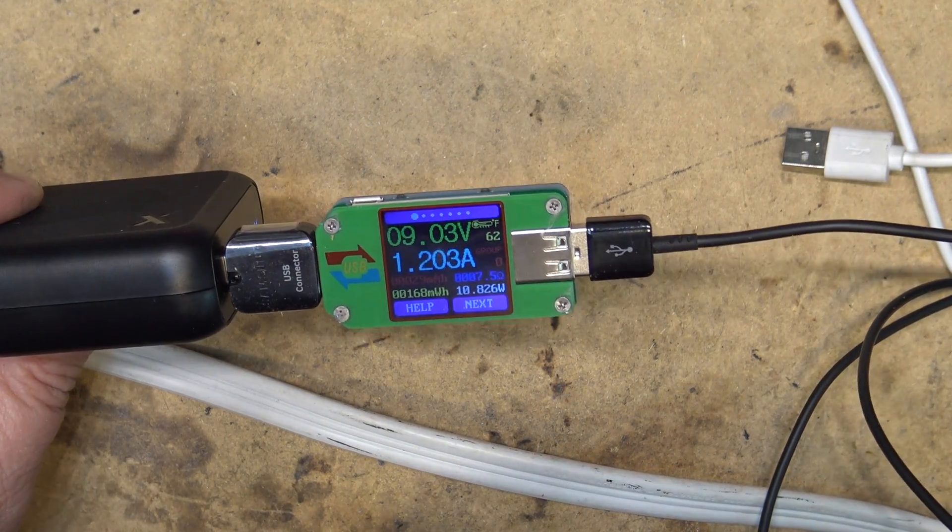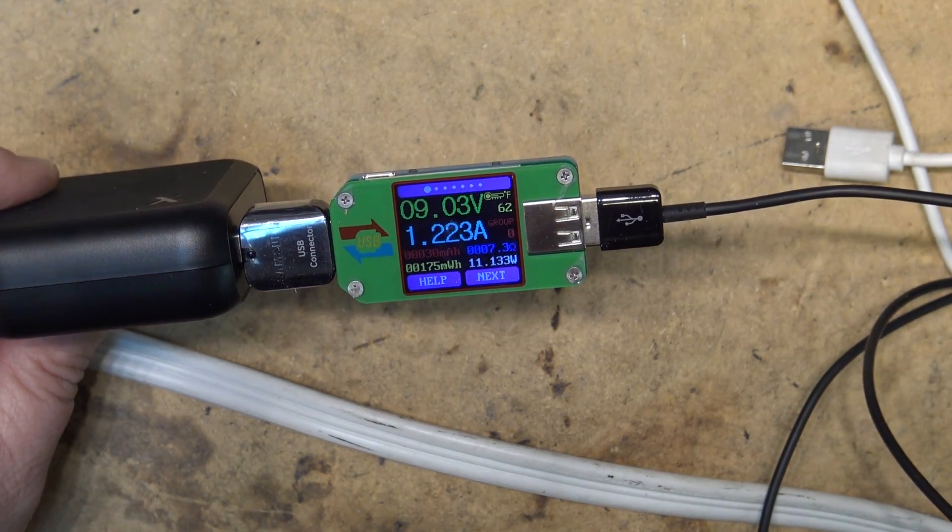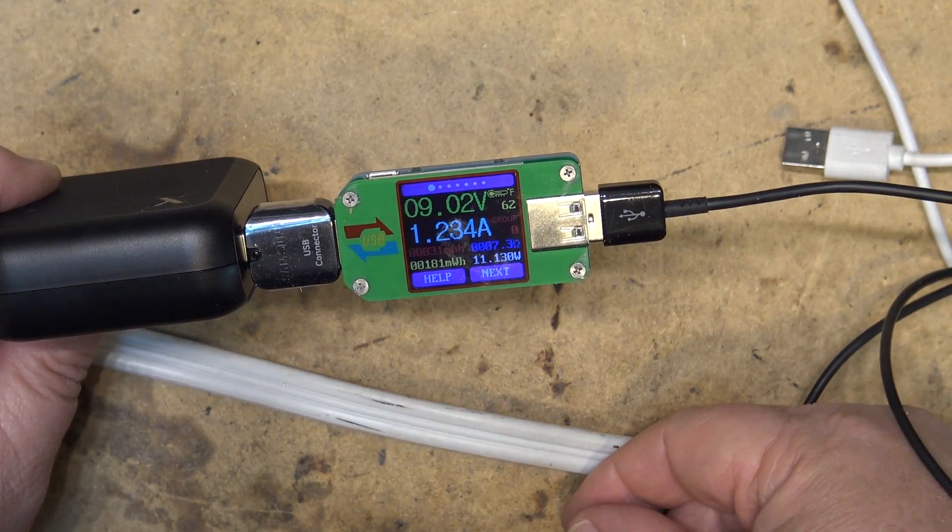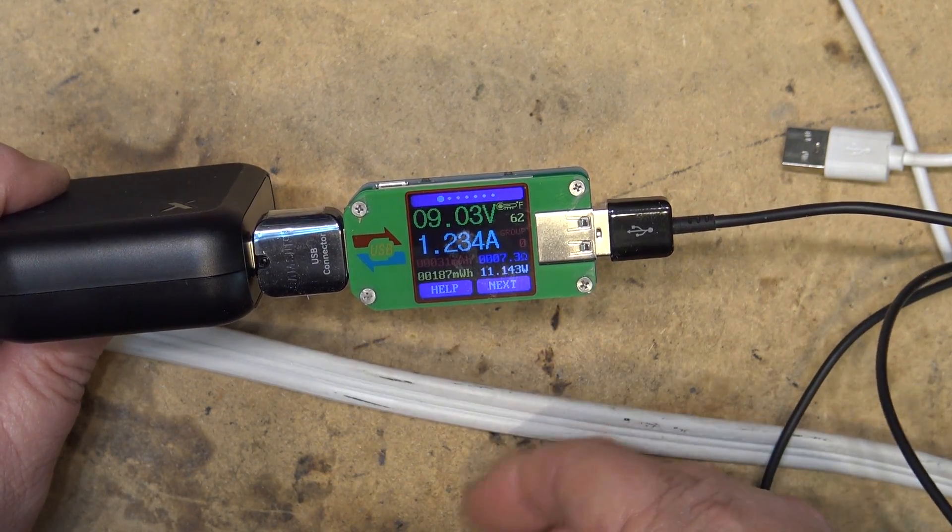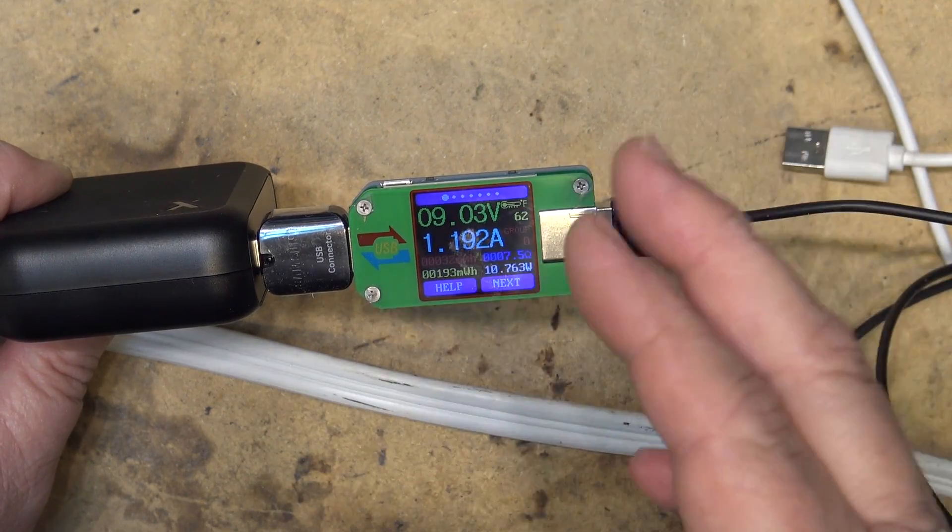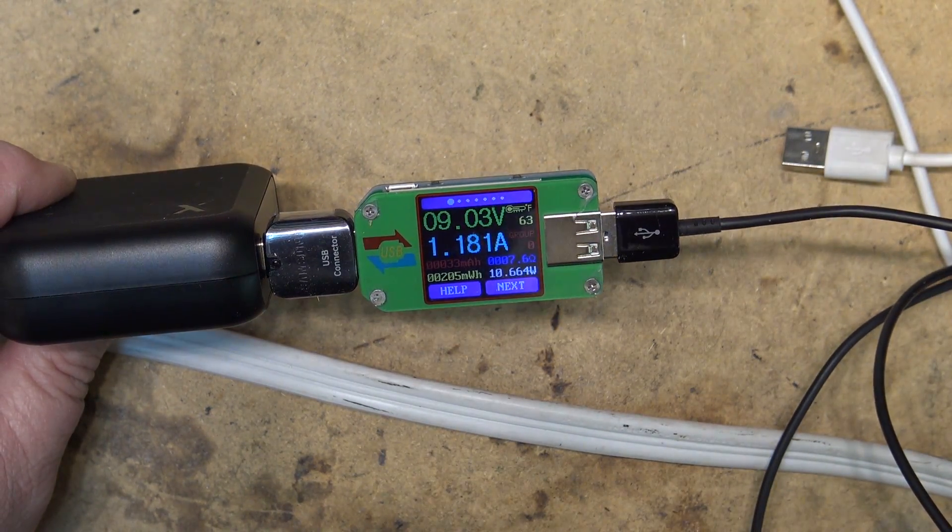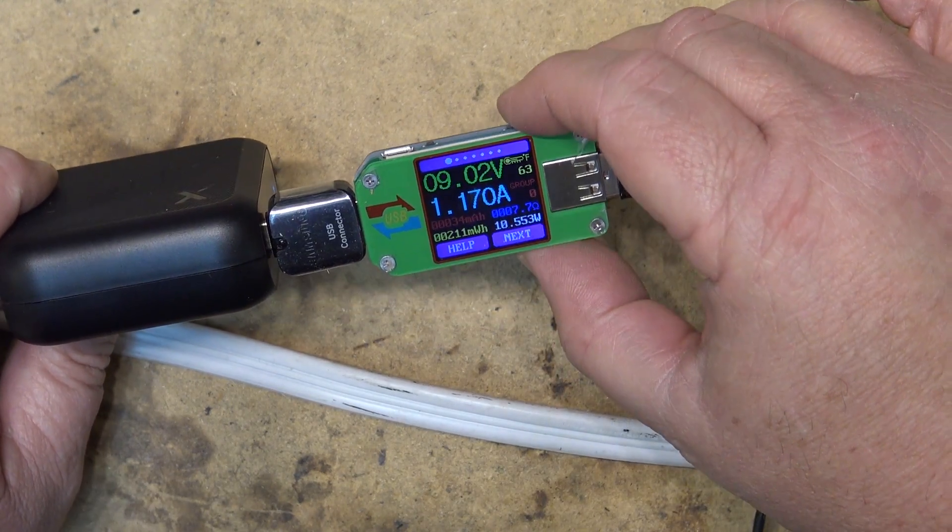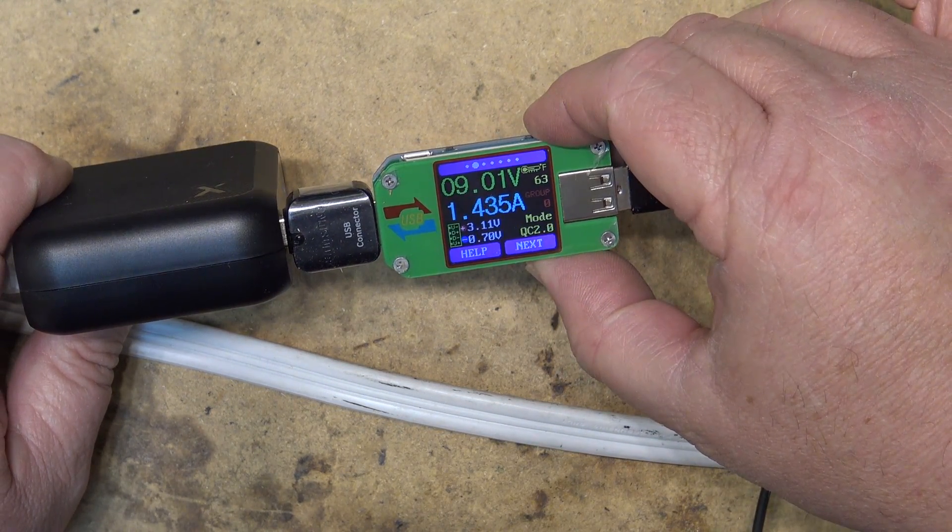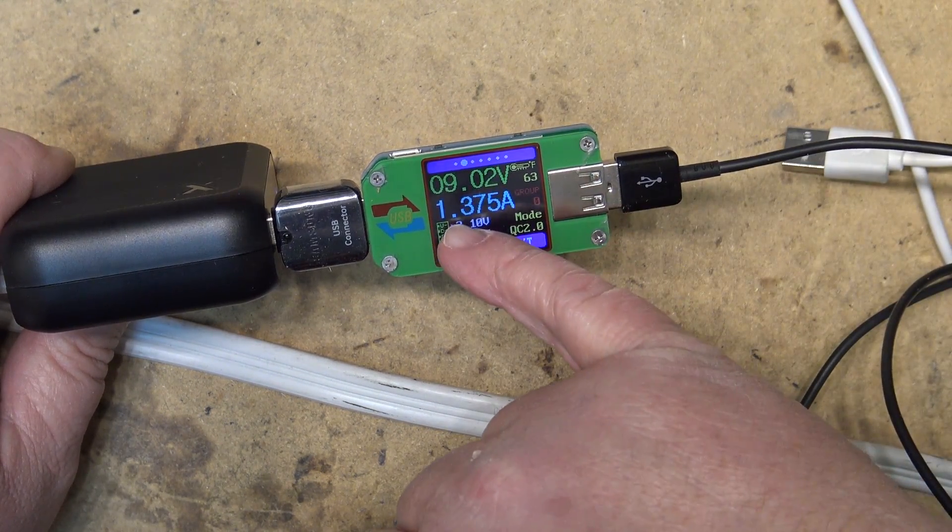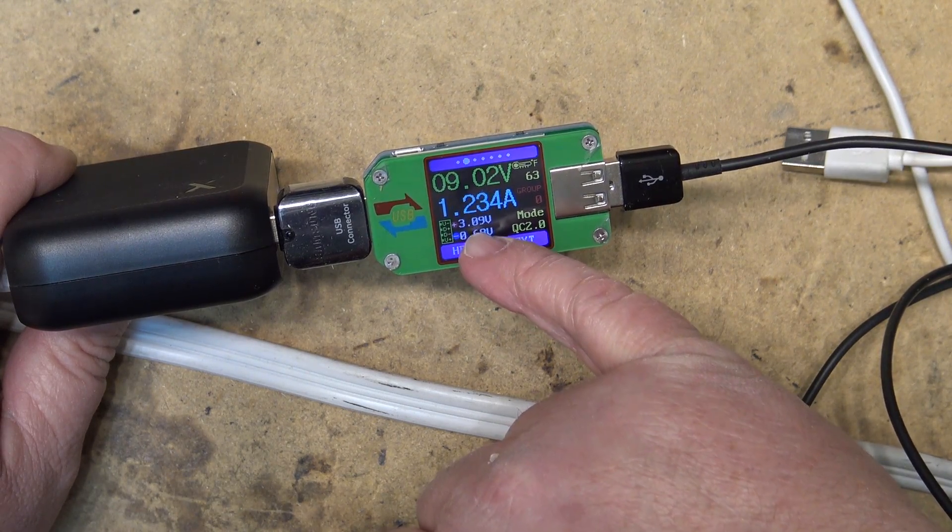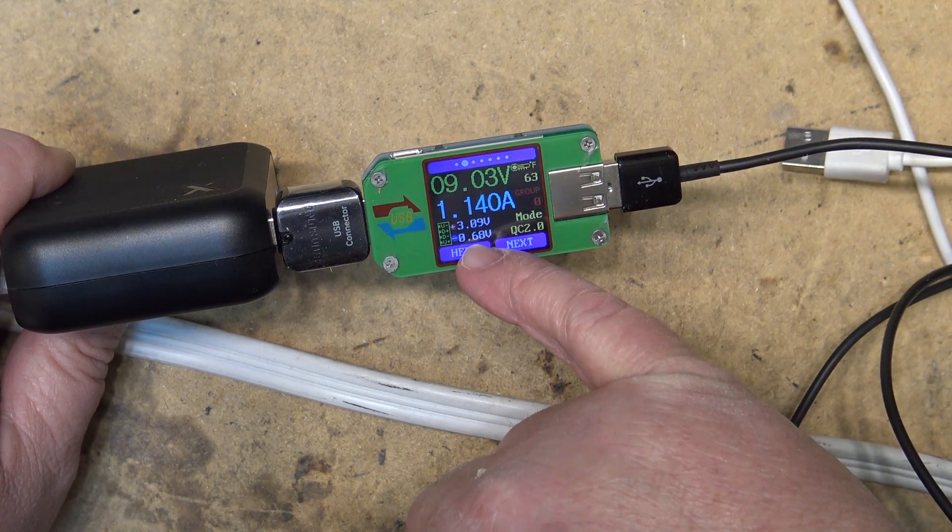The phone sets a voltage on the control line to tell the unit which voltage to use. It uses the data lines and sets a resistance to determine what the charge voltage is. If we look at the different screens here, it's setting one data line at 3 volts and negative 0.6 on the other data line. This is called Quick Charge mode 2.